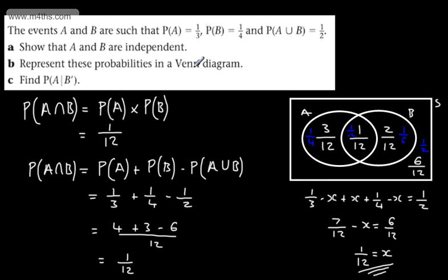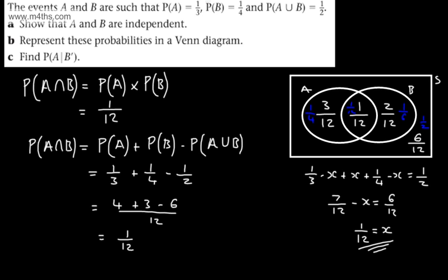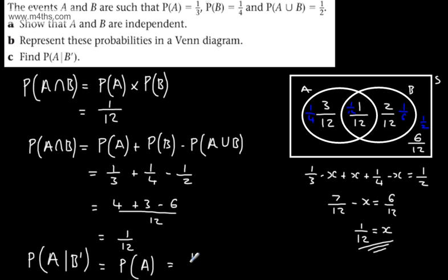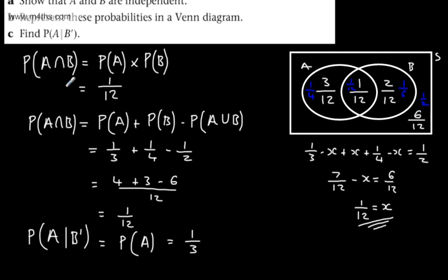Since these are independent events, the probability of A given not-B simply equals the probability of A, which is one-third. Whatever B does, it doesn't influence the probability of A, so the answer is one-third.